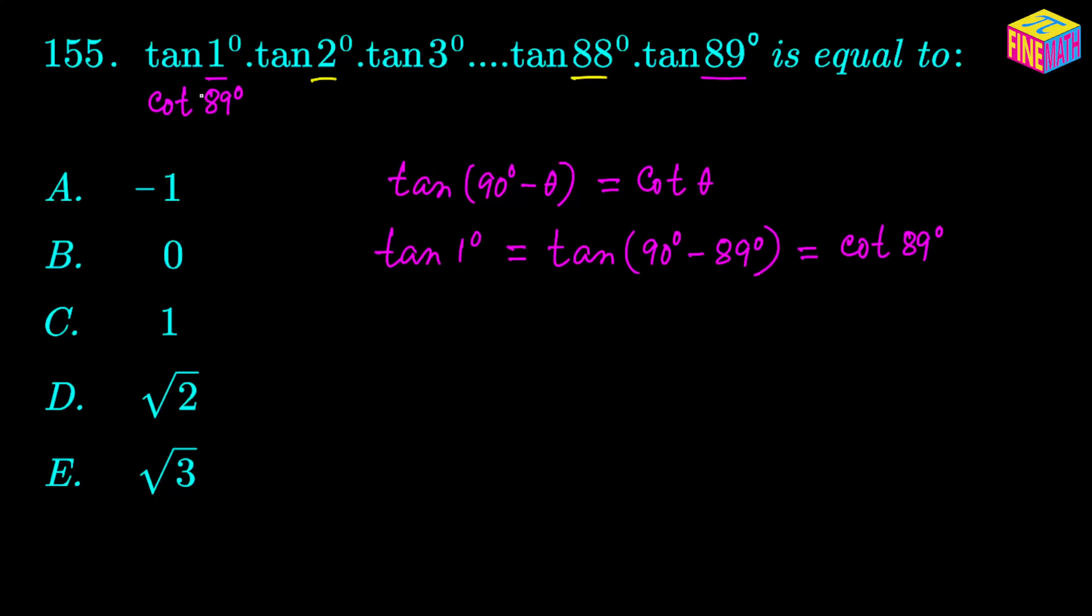Now think about the first factor and the last factor. Let's multiply them together and see what happens. So the first factor, now looking like cotangent of 89 degrees, times the last factor, which is tangent of 89 degrees, can be written as 1 over tangent of 89 degrees times tangent of 89 degrees, and that is equal to 1.